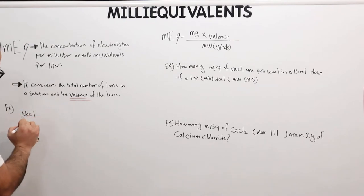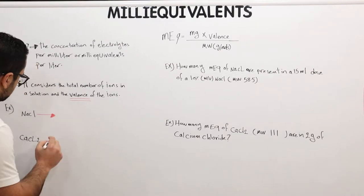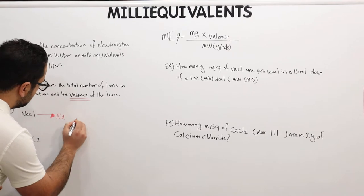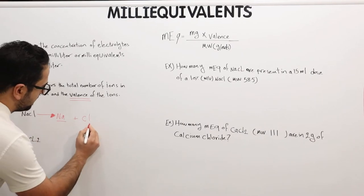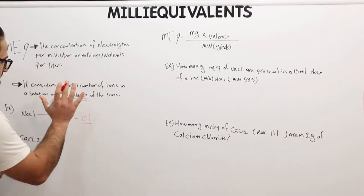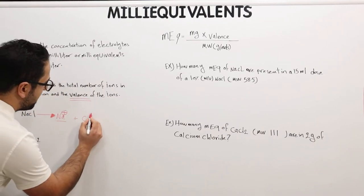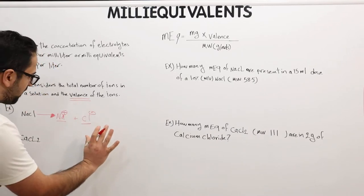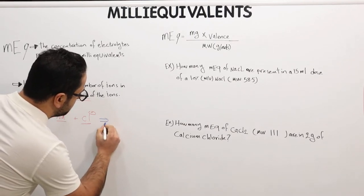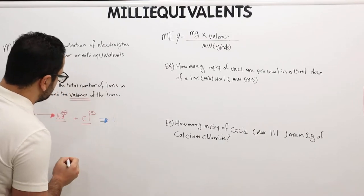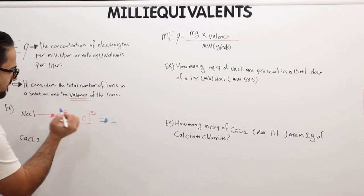Let's take an example — sodium chloride. Previously we discussed that sodium chloride dissociates into sodium plus chloride, and we said there are two particles. There is one particle here and another here. However, valence is different. Here we have a positive charge and here we have a negative charge. Therefore, the valence count for sodium chloride is equal to one, because we have one positive and one negative.